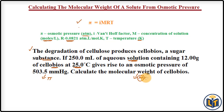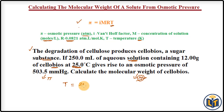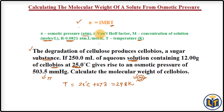First, we find the relevant units. In this formula, temperature must be in Kelvin, but the problem gives temperature in degrees Celsius. So we convert: T = 25°C + 273 = 298 K.